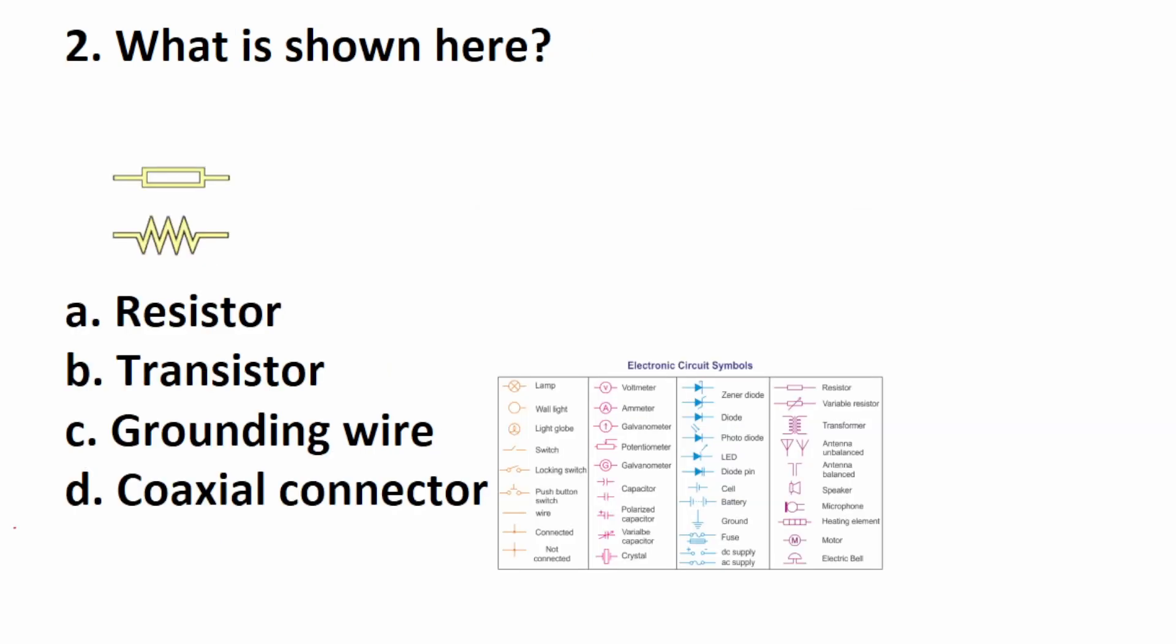Number two says, what is shown here? For the ASVAB and PiCAT, you do have to know some very basic electronic circuit symbols. If you look at this chart here, you'd be able to say that this is A, a resistor.